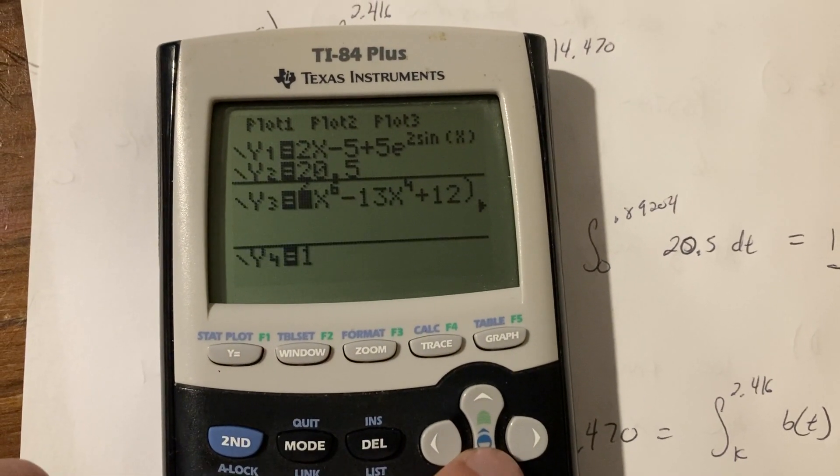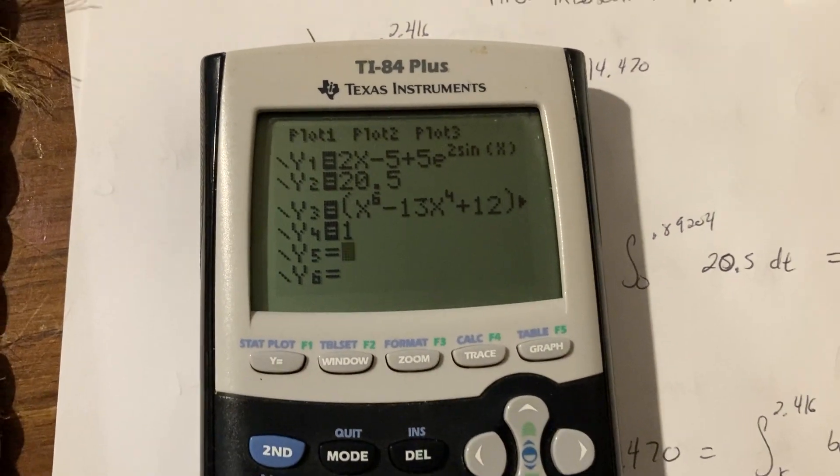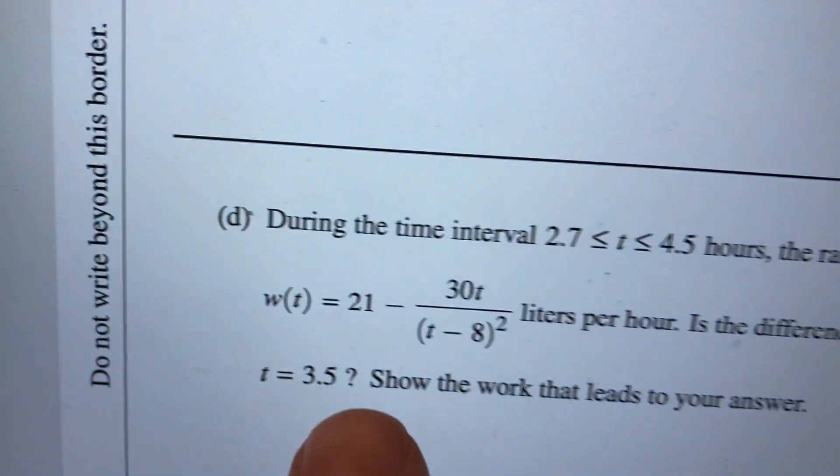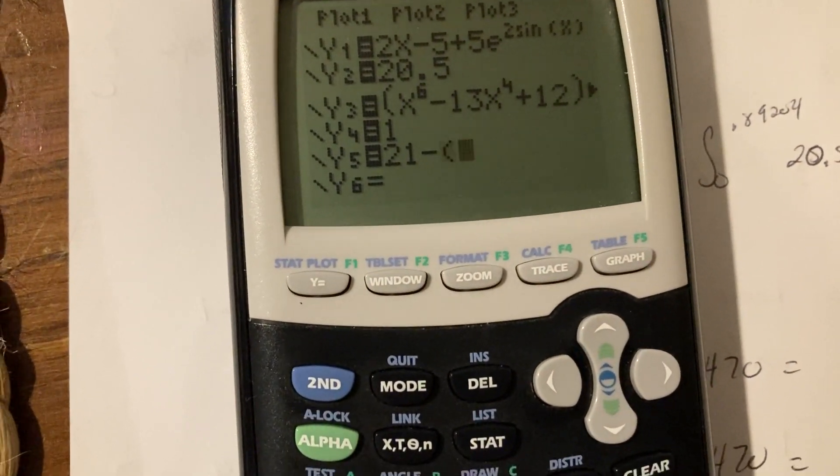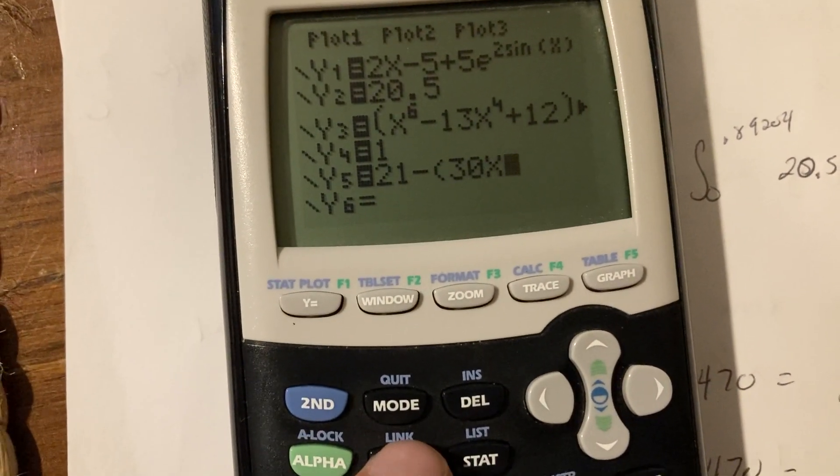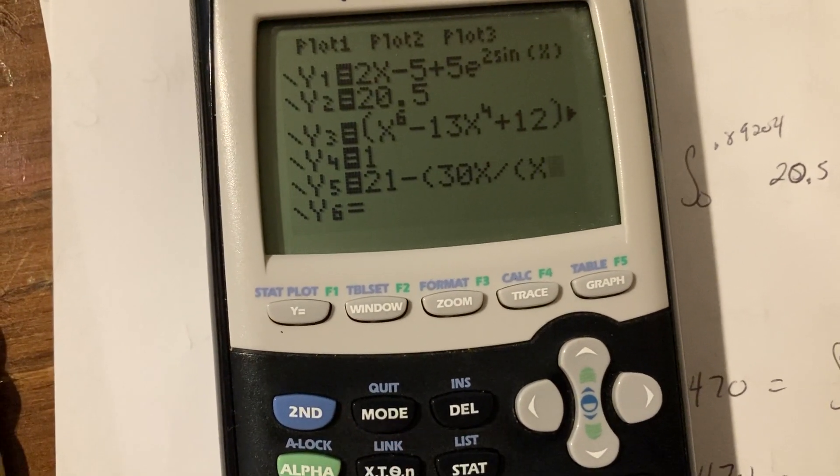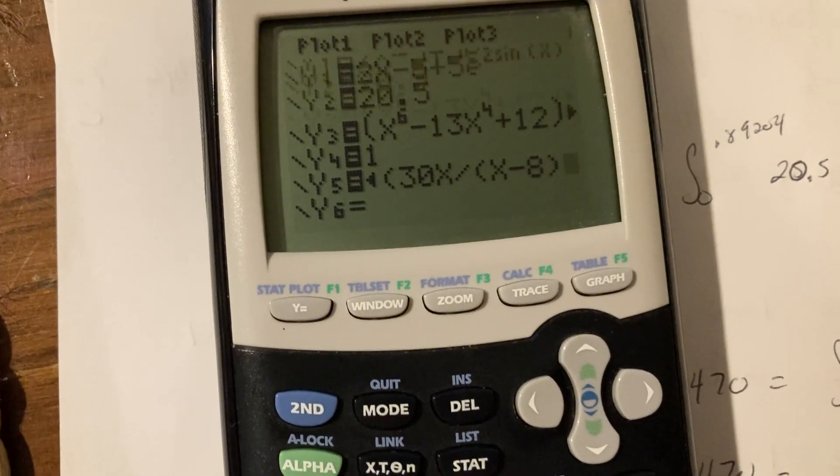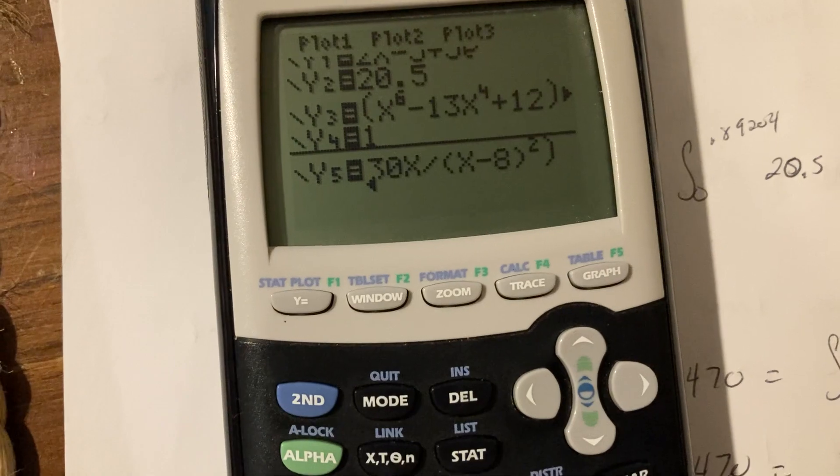I'll do one right here. So this Y5 is going to be the WFT right here, 21 minus 30T. So I have 21 minus the quantity 30X divided by the quantity X minus 8 squared. And all that. Perfect.